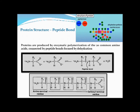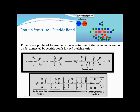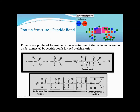Now we move from amino acids to the protein structure, but before studying protein structure, we need to understand the peptide bond. When two amino acids come together, a reaction occurs and a peptide bond forms between them. Proteins are produced by enzymatic polymerization of the 20 common amino acids connected by peptide bonds formed by dehydration. The carboxylate group of one amino acid and the amino group of another amino acid are at the reacting positions.